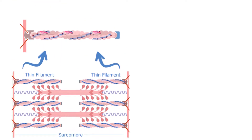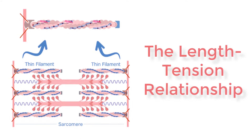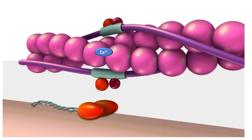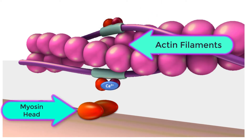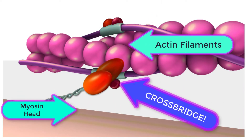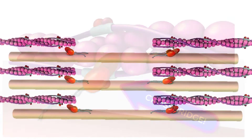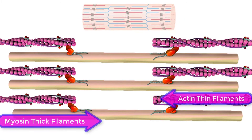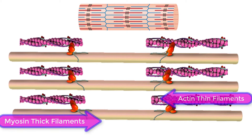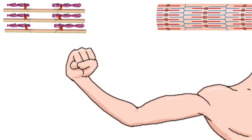Let's look at a phenomenon known as the length-tension relationship of a sarcomere. When a skeletal muscle fiber contracts, myosin heads attach to actin to form cross-bridges. This is followed by the thin filaments sliding over the thick filaments as the heads pull on the actin, resulting in sarcomere shortening and creating the tension of the muscle contraction.